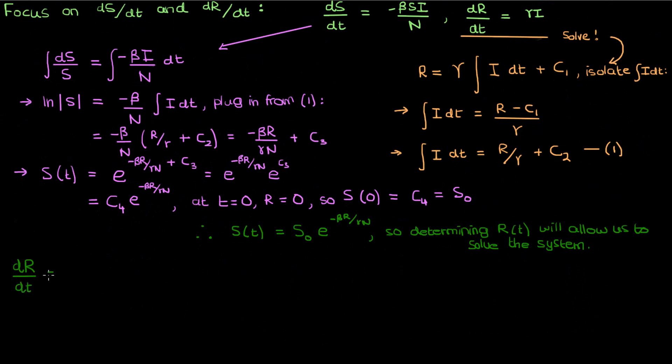Let's go to the dR by dt equation now. We know that I is just N minus R minus S, so we can plug that in here. Finally if we plug in the S in terms of R, this is what we get.